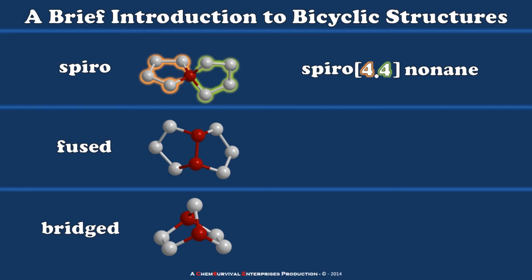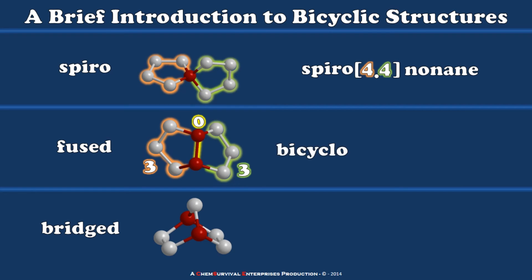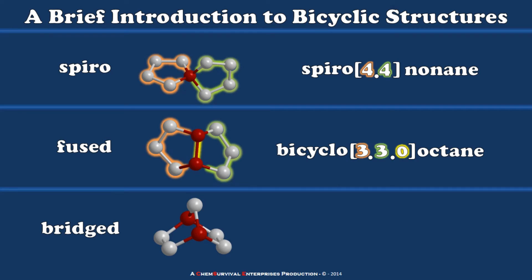Now let's take a look at the fused bicyclic. My fused compound has an obvious bridge of three and another obvious bridge of three. But notice that I now have two bridgehead carbons joined directly, which means I can think of that as being a bridge of zero. So to distinguish this from a spiro compound, I first call it a bicyclo, then place brackets with a list of all the different bridge lengths within the scaffold. So here I have a bicyclo[3.3.0] compound. Finally, I tally all of the atoms within the bicyclic system, including bridgeheads and bridge carbons, and I find that I have eight. So this is a bicyclo[3.3.0]octane molecule.